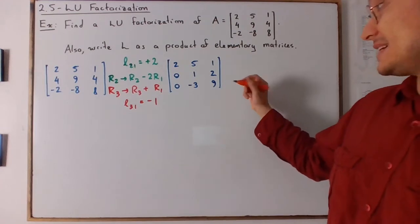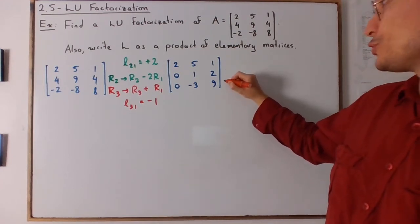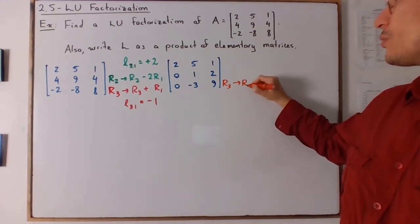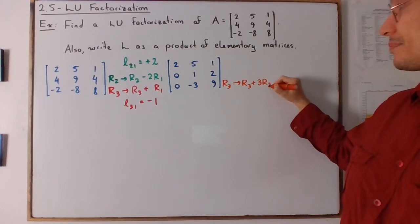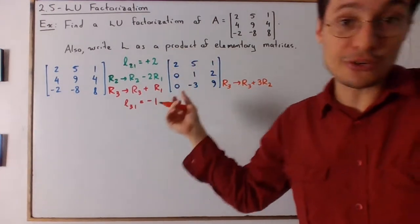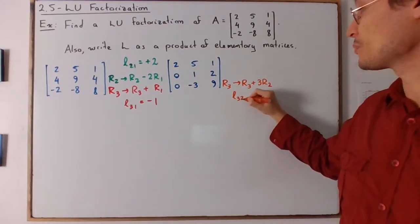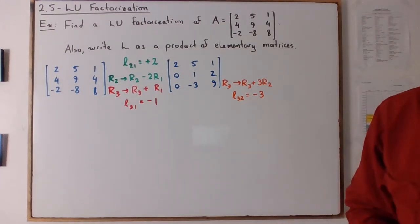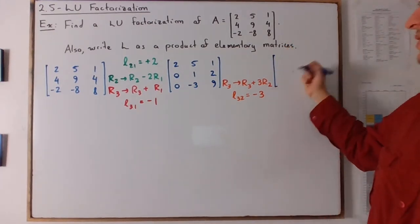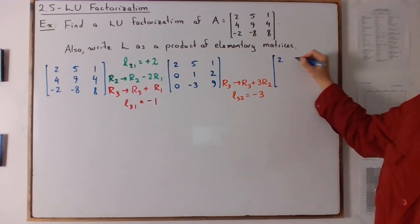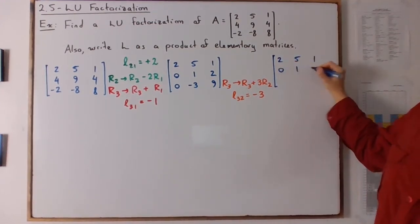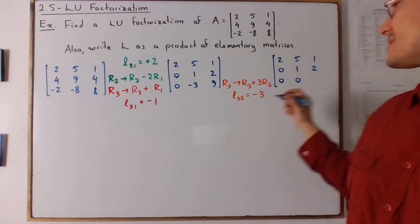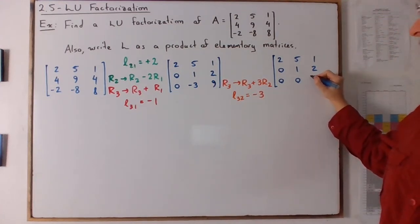Now, after this, we're going to do row 3 becomes row 3 plus 3 row 2. And we get the drill, right? So L32 will be equal to negative 3. And now, we get our row reduction, which is, let's see, 2, 5, 1, 0, 1, 2, and 0, 0, and 9 plus 6 is going to give you 15. Here we are.